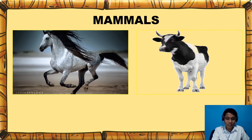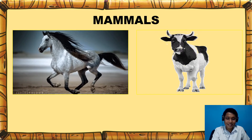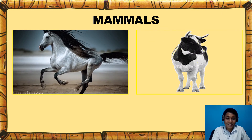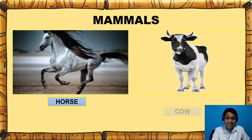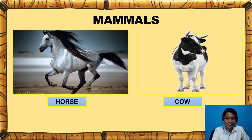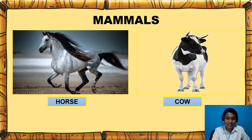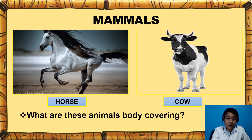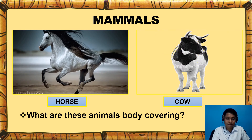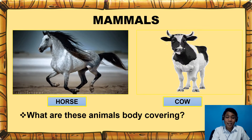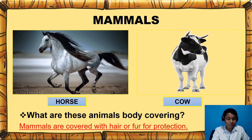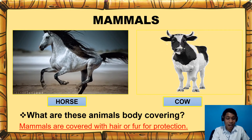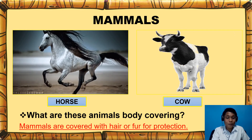What are these animals? A horse and a cow. Now, what are these animals' body covering? These animals are covered with hair or fur for protection.